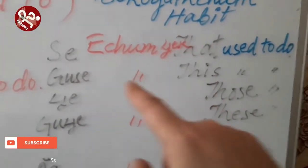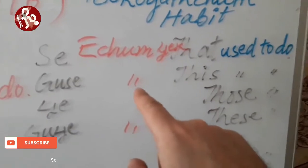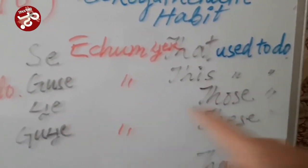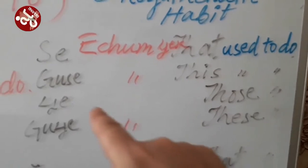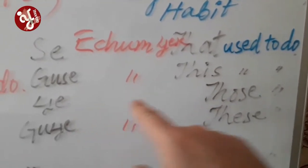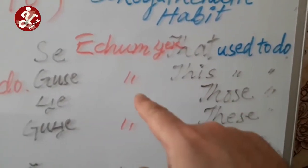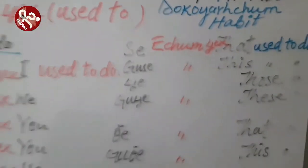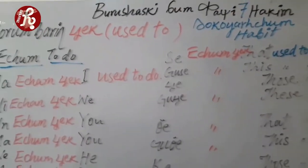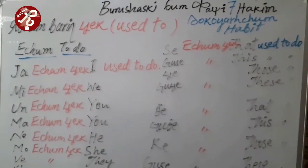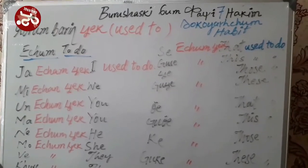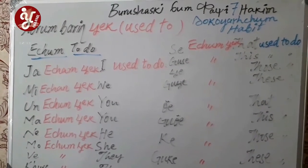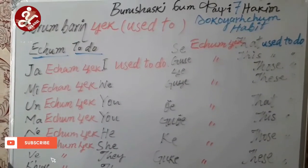'Se acham check' — that used to do. 'K' is used as a service word meaning 'that used to sit.' 'K bali check' means 'that used to walk.' You can similarly say 'that used to talk.' In that way, you can make other sentences — past habitual sentences. Thank you.